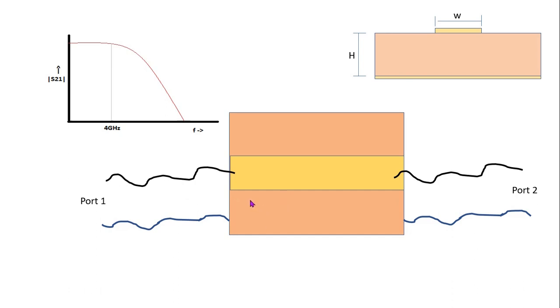Perfect, because S21 is giving you the sense like what portion of your incident wave is going to port 2. So if it is a 4 gigahertz low pass filter, that means your S21 will be high up to 4 gigahertz and after 4 gigahertz it should get lowered. Now to realize the low pass filter, perfect.